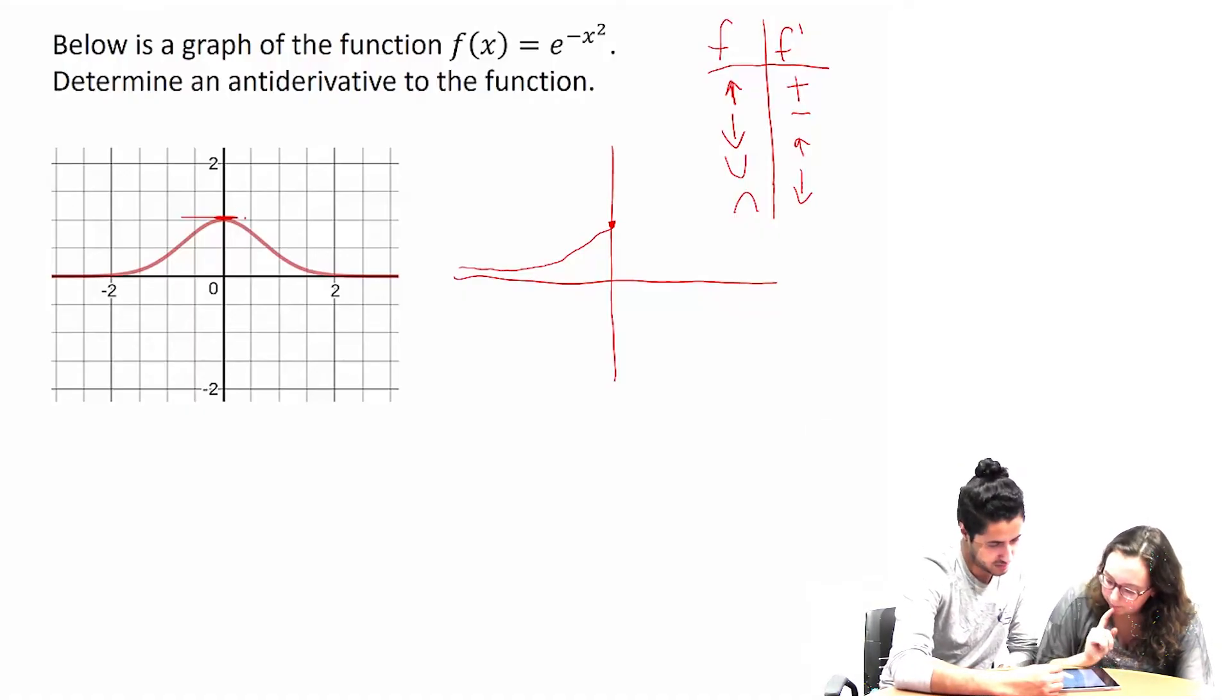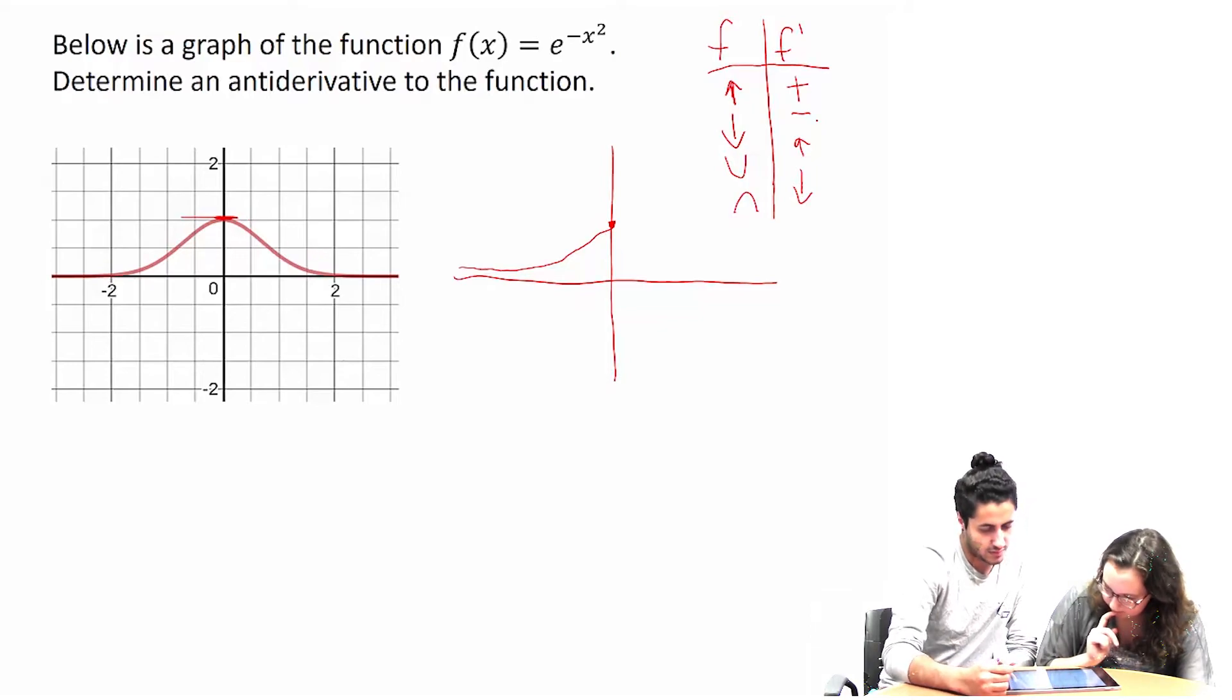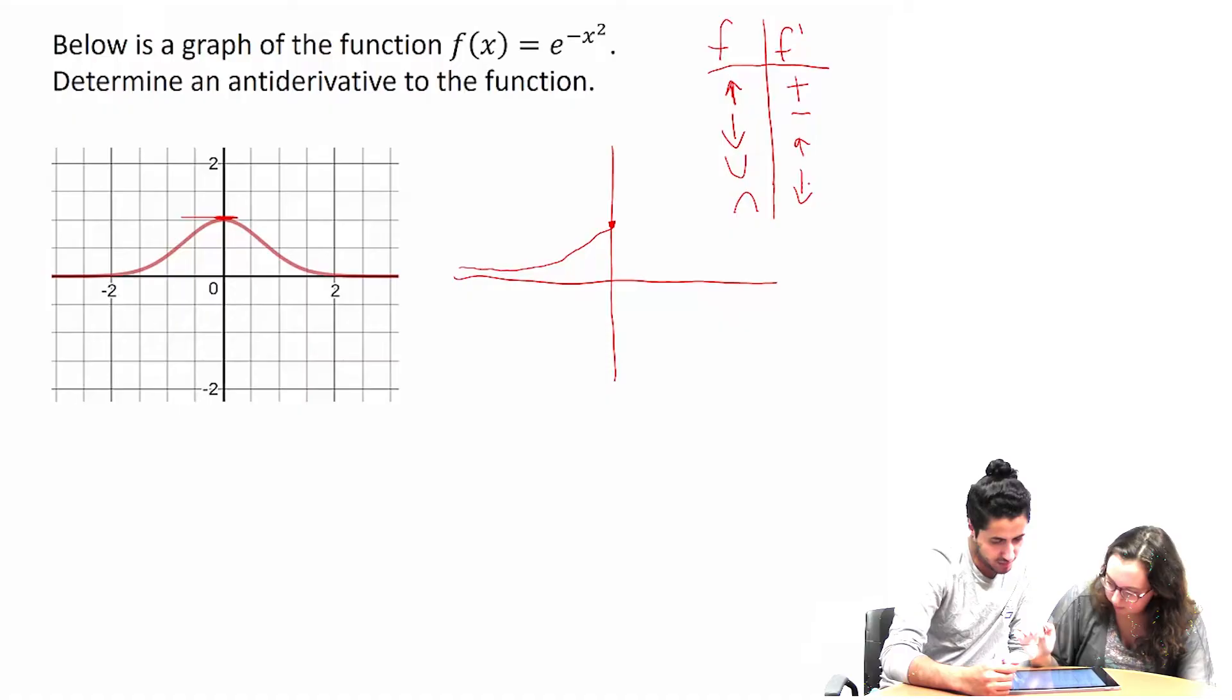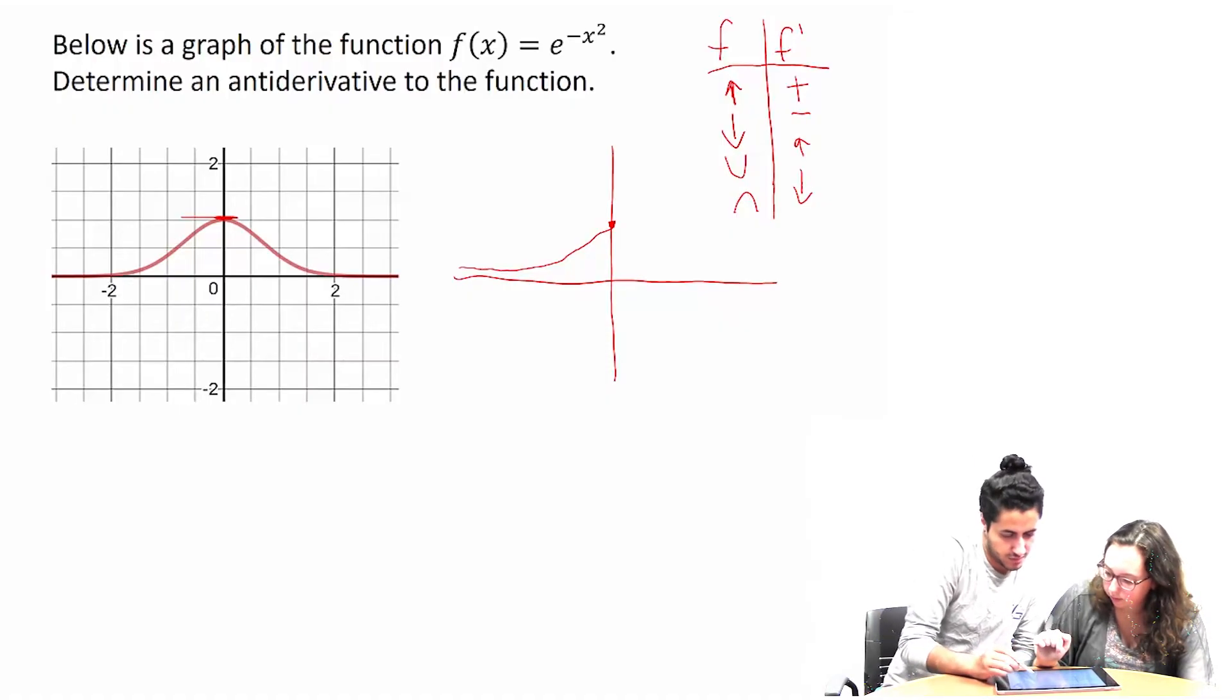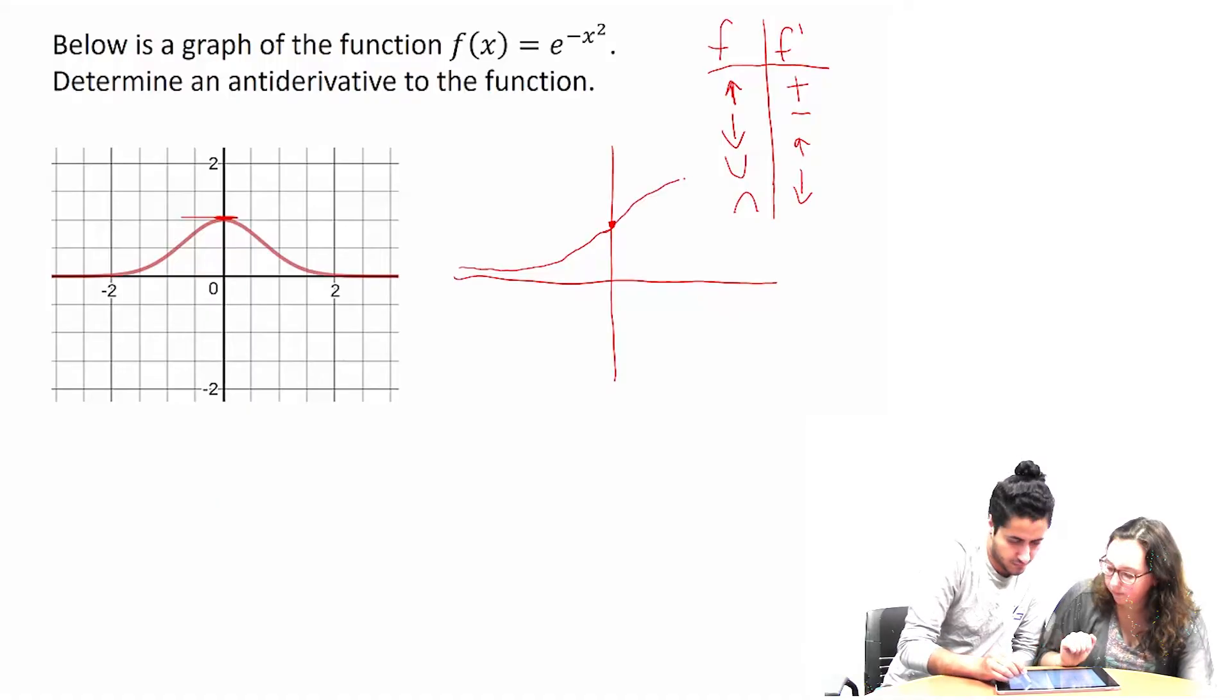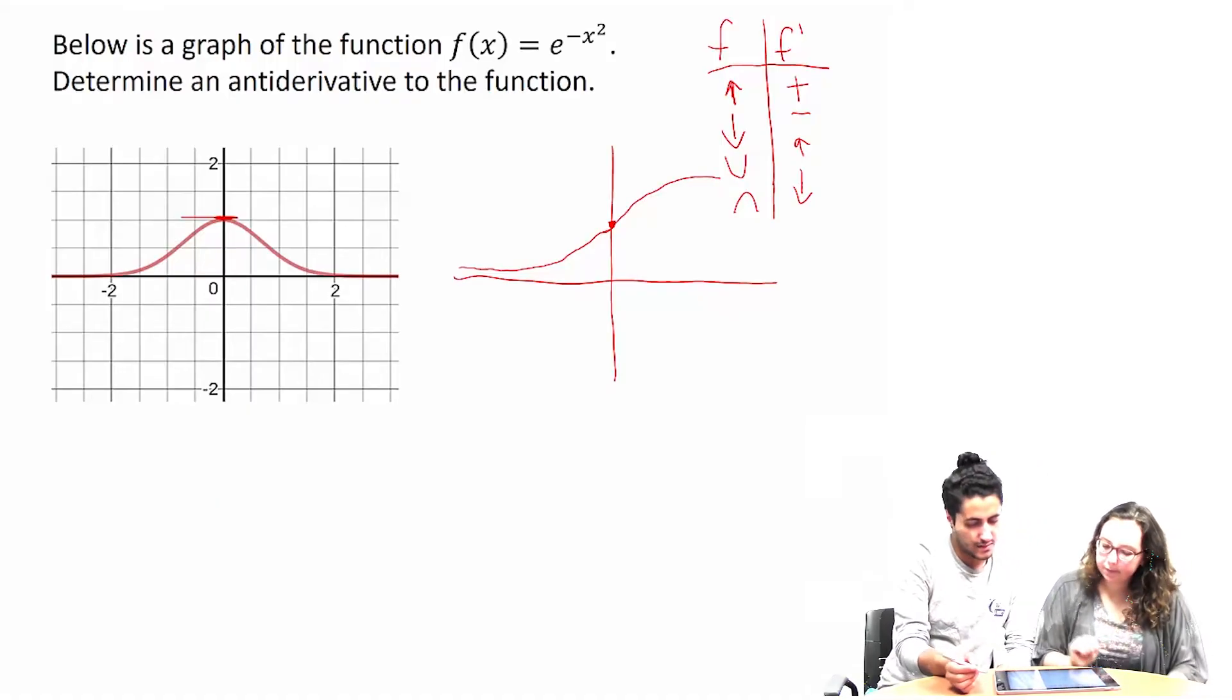And then we're still positive, but we're decreasing, so it should be concave down. Down. Yeah. So then something like that. Okay.